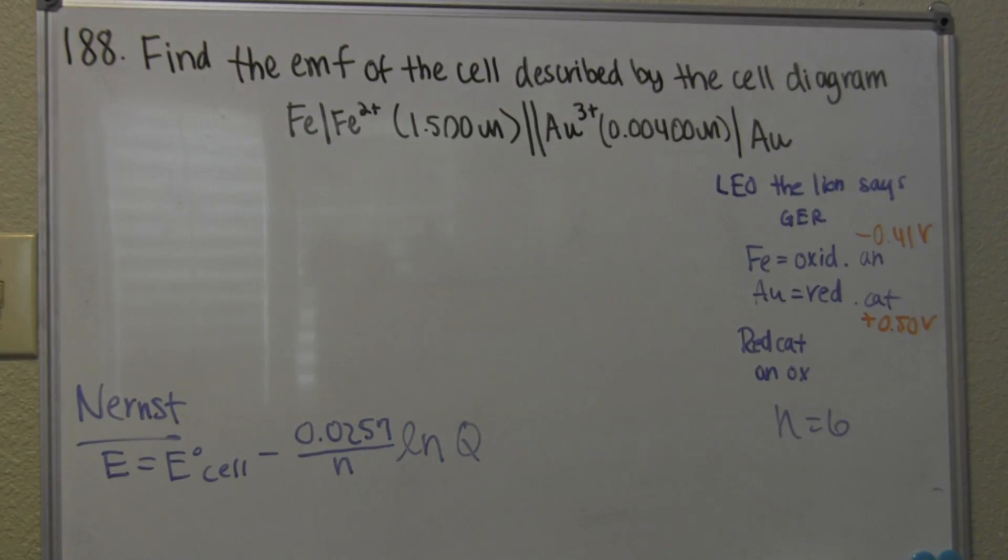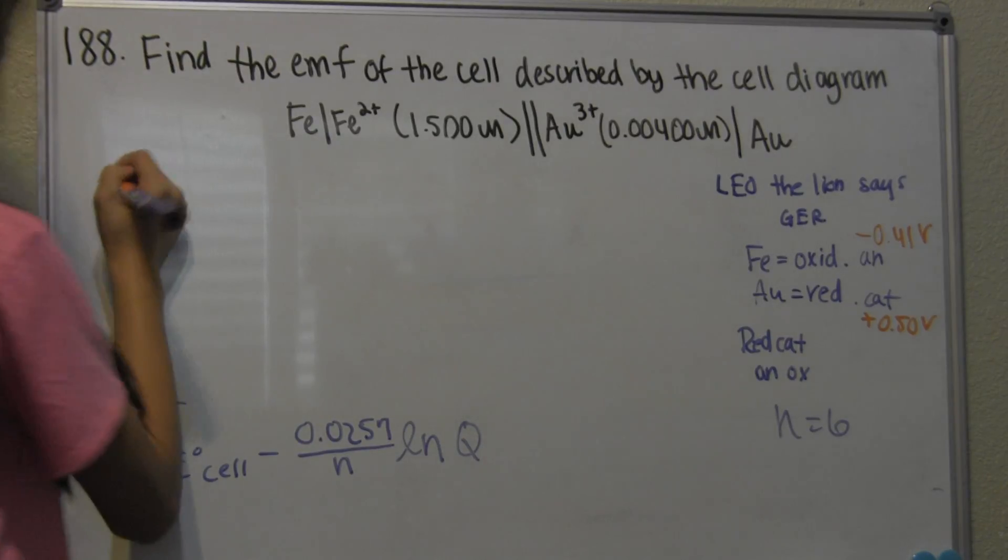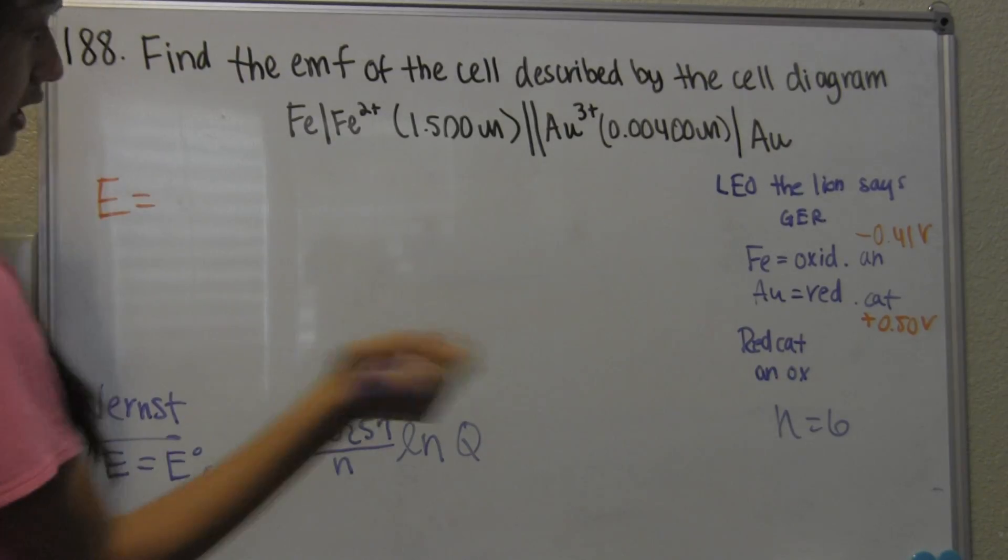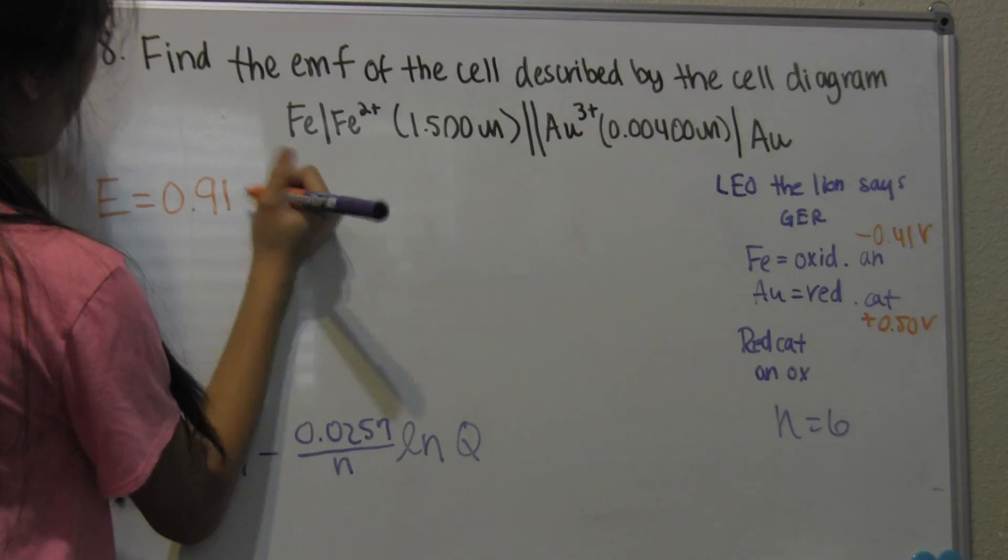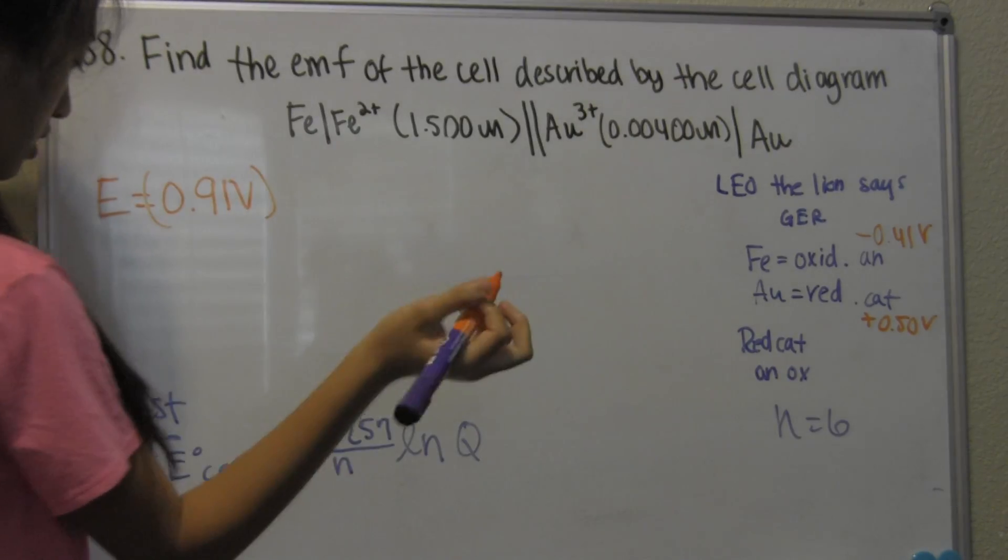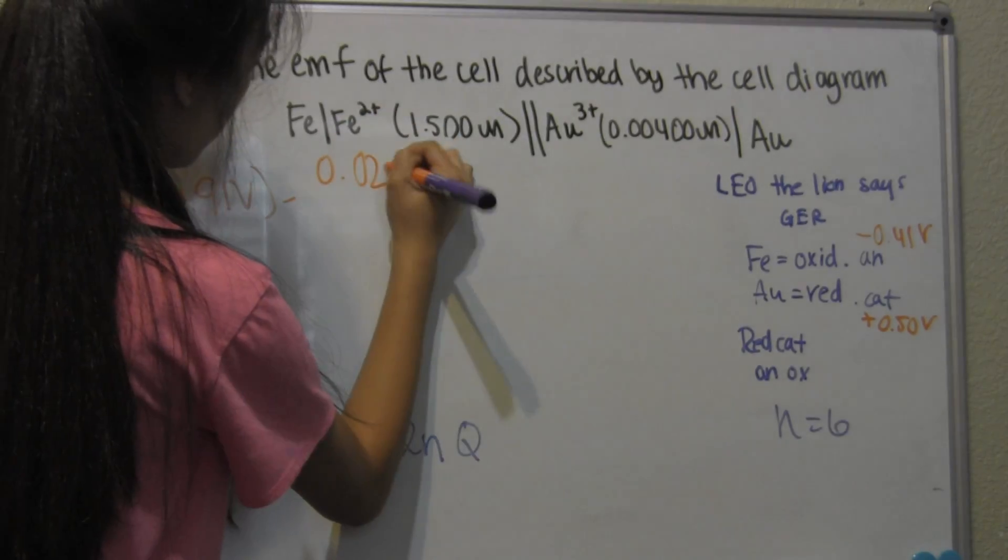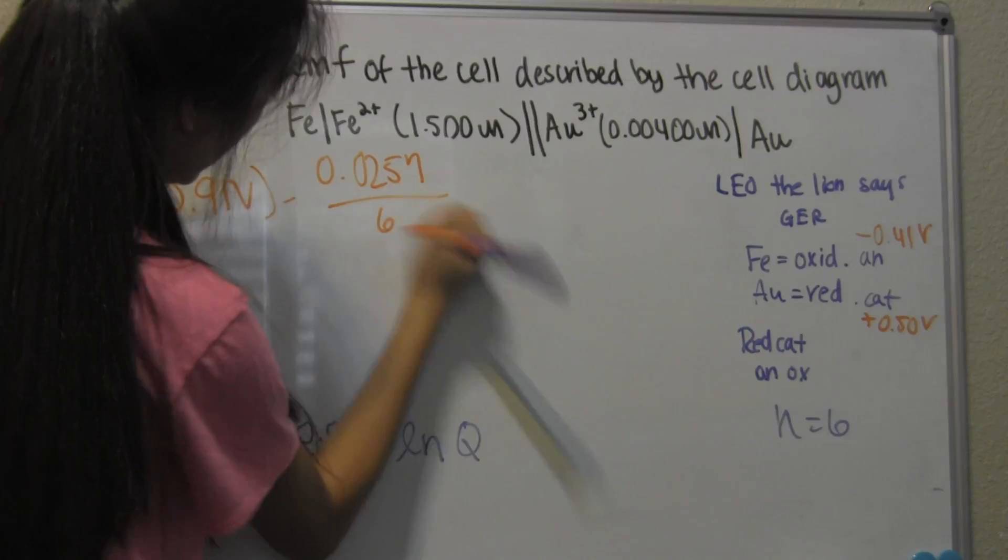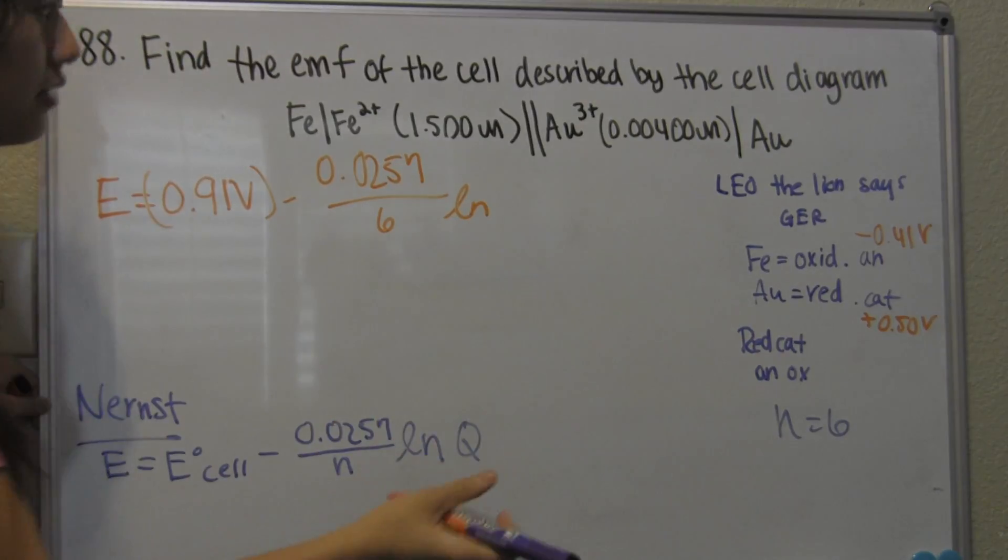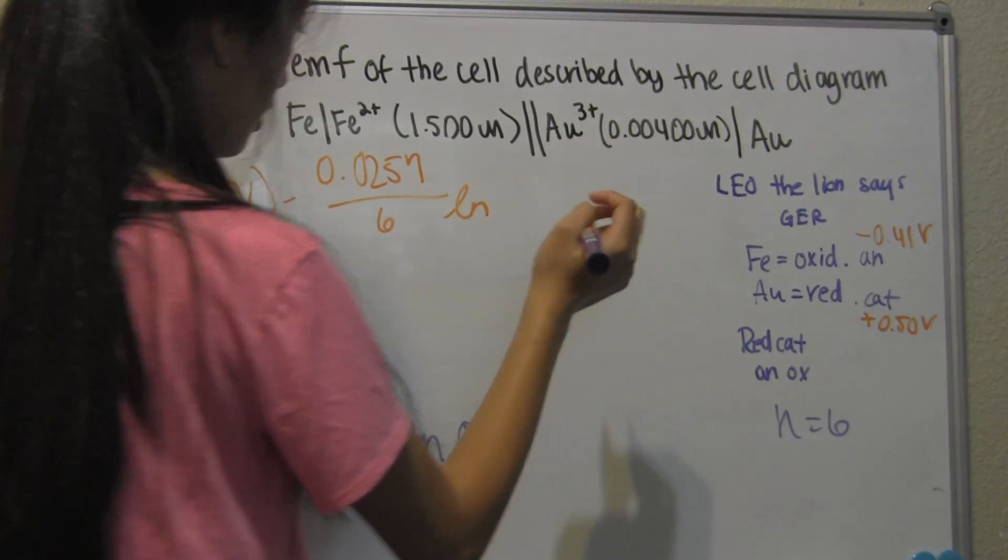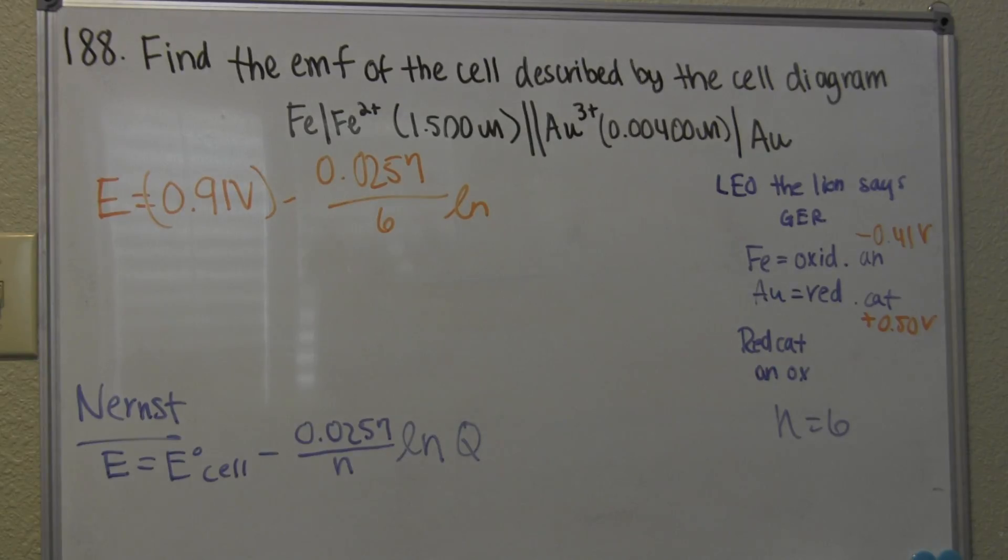Now let's plug in all the values. E equals E of the cell, which is 0.91 volts, minus 0.0257 over 6 ln of Q, which is the 1.5 M, which is iron,